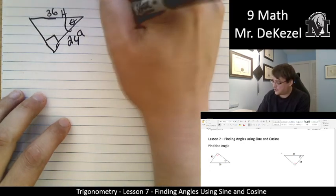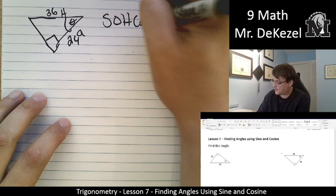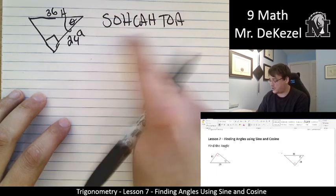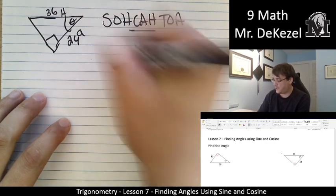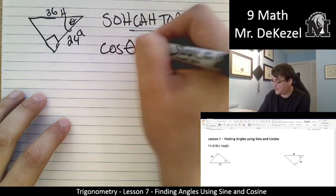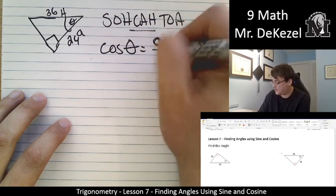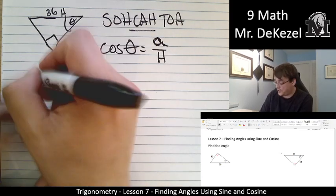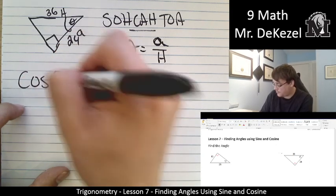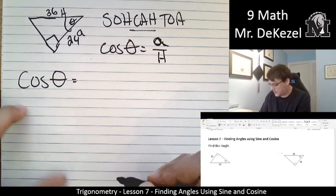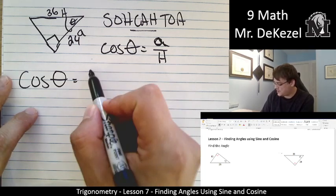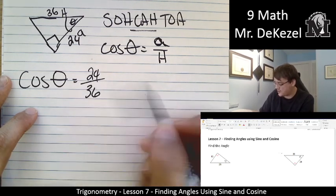So, that means that we are going to be using, let's see, let's write out our ratio. A and H, that's in cosine. So, we have cos theta is equal to adjacent over hypotenuse. We'll plug in what we know. We don't know theta. Cosine is just a button on our calculator. It's equal to adjacent, which is 24, over hypotenuse, which is 36.